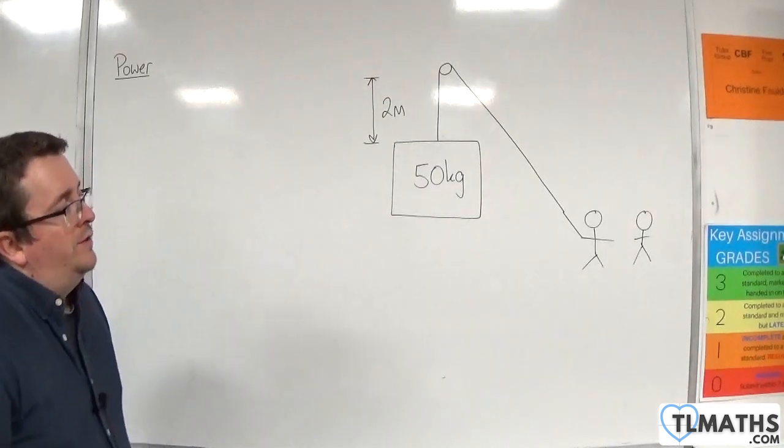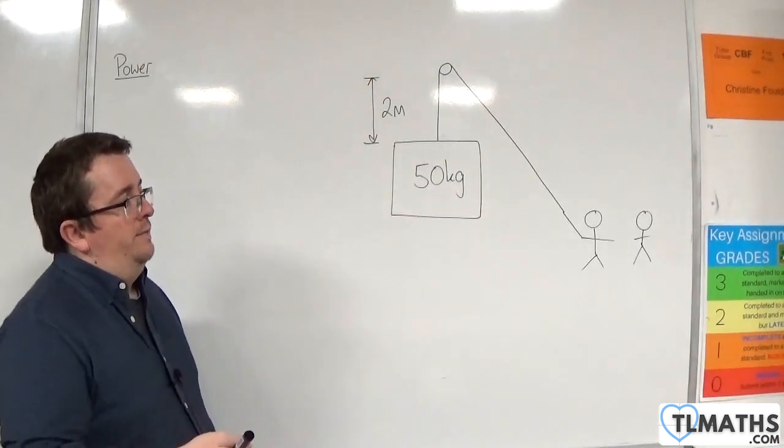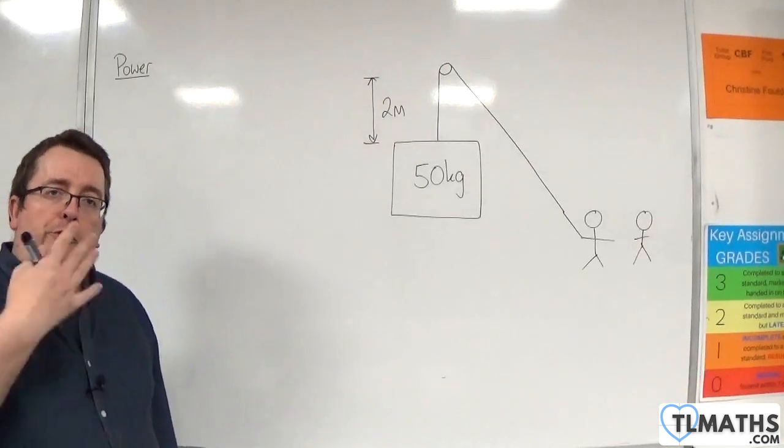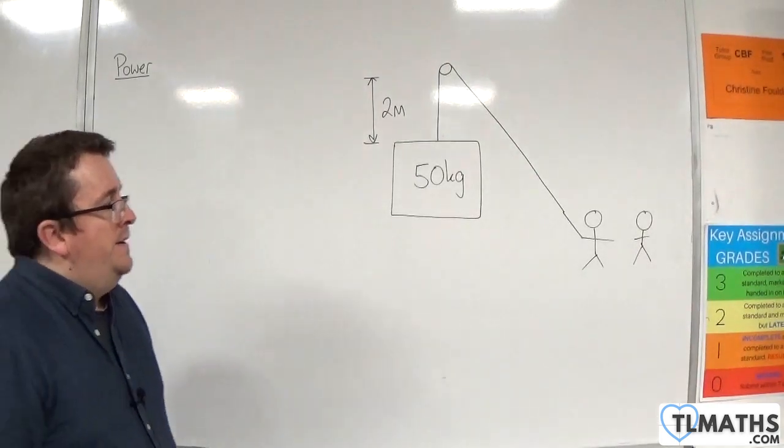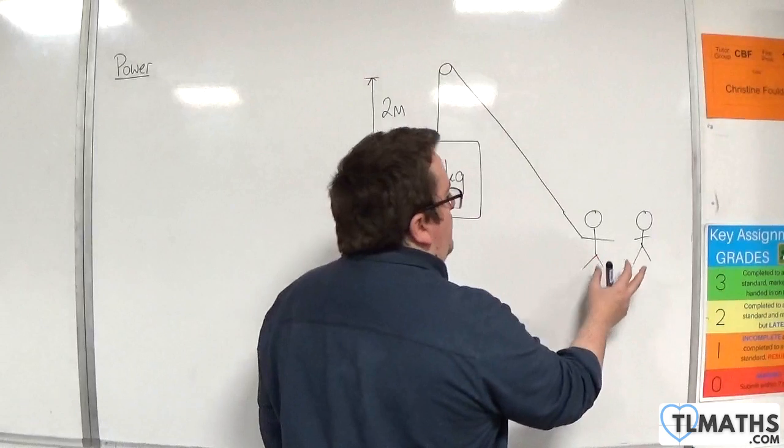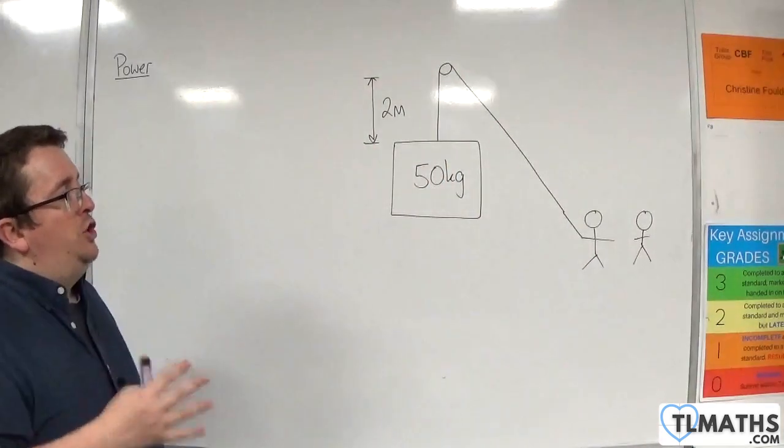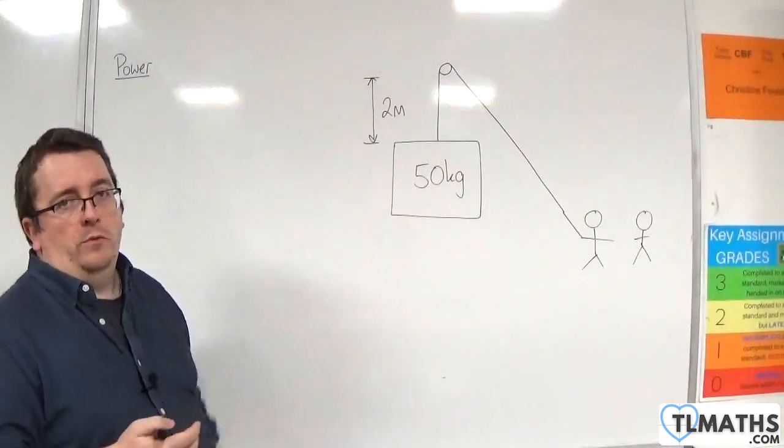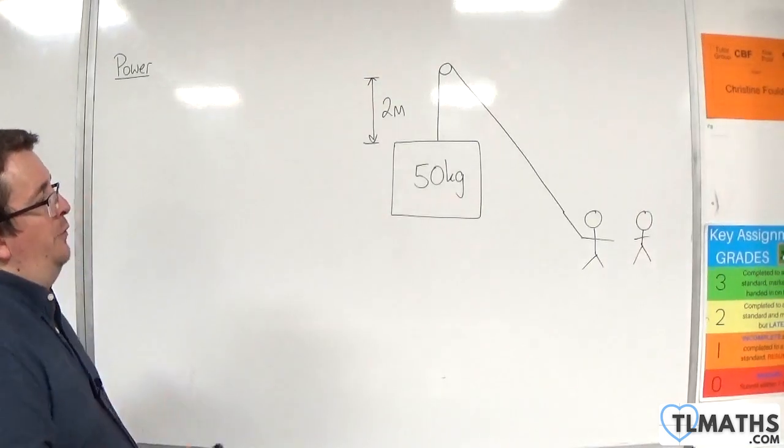Now the current measurement that we've looked at is work done where we're multiplying the force by the distance. Now let's say that both of these people manage to pull the crate right up to the top. So they pull it up the full two metres.